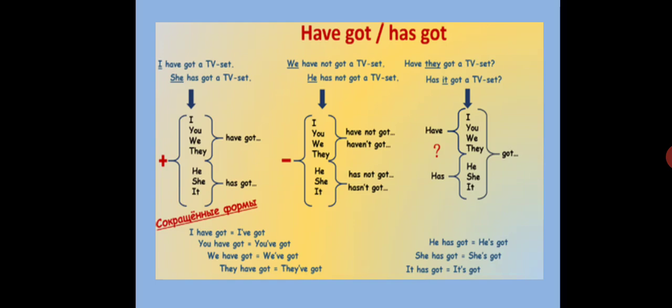I, you, you (plural), we, they use have got. He, she, it has got. In the third person, when using he, she, it, has got is used.